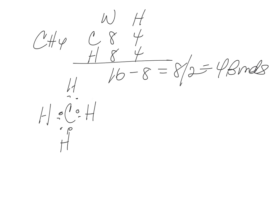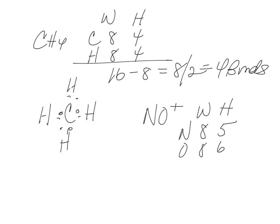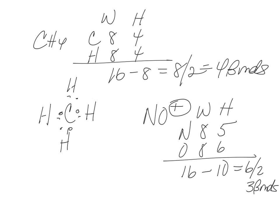Let's do one last example that involves an ion: NO+. N wants 8 and has 5; O wants 8 and has 6. The plus 1 charge means it lost 1 electron. So we have 16 minus 10 equals 6, divided by 2 equals 3 bonds — a triple bond between N and O. I need a total of 10 electrons. Since it's an ion, it goes in brackets with the +1 charge shown outside.